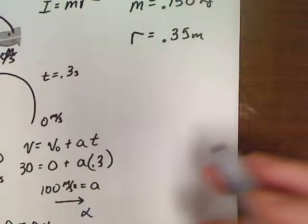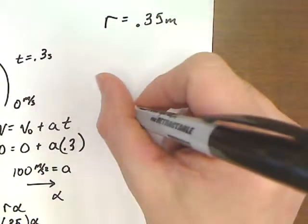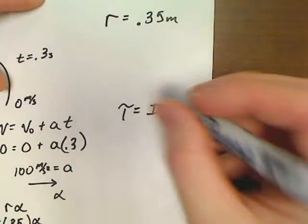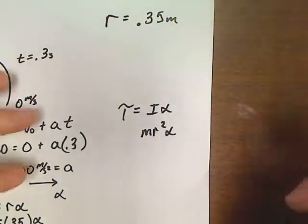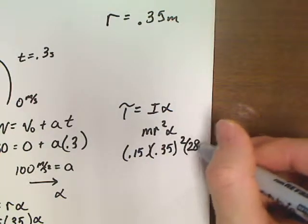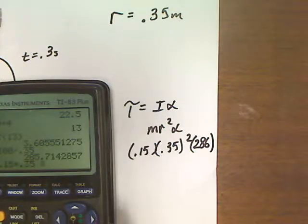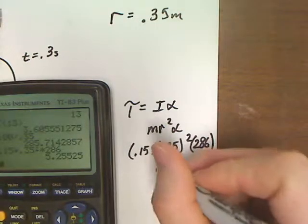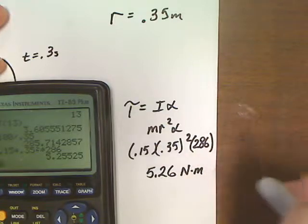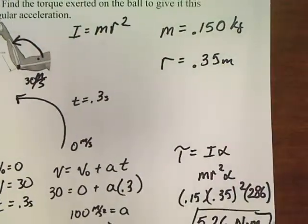Part B: find the torque. We don't know F directly, but torque = Iα. For a point mass on a massless arm, I = mr². So torque = mr²α = 0.15 × (0.35)² × 286 ≈ 5.26 N·m.